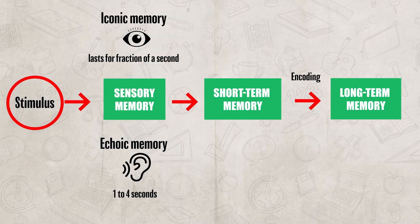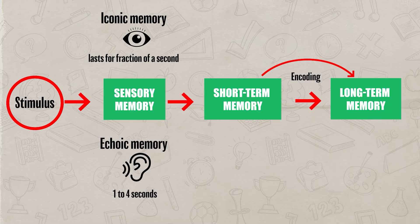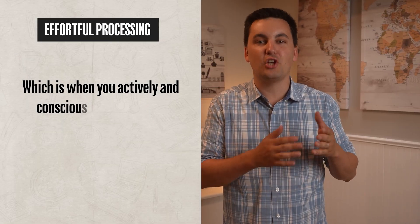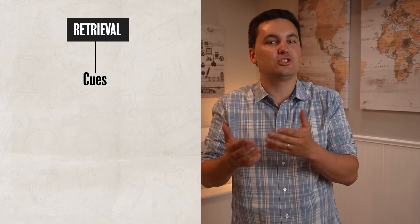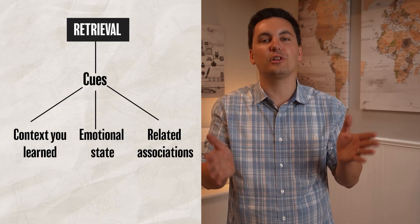After that comes encoding — this is where information is transferred from short-term memory to long-term memory. If encoding is successful, the memory gets stored and can be retrieved later when you need it. To successfully encode a memory, it often requires effortful processing, which is when you actively and consciously try to encode information, for example using strategies like mnemonics or chunking. Once information is stored in long-term memory, retrieval usually depends on different cues, like the context you learned the information in, your emotional state, or related associations.